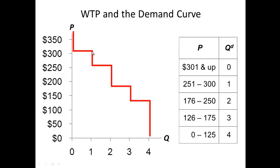At $300 we only have one individual; at $250 we have two individuals; at $175 we have three individuals; and at $125 we have four individuals. The relationship between the demand curve and willingness to pay is that as we map out the individuals, we get a stair-step type chart, but when you add more and more individuals, the stair-step smooths out, and what you end up with is the demand curve.